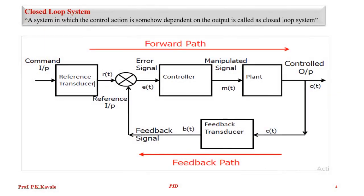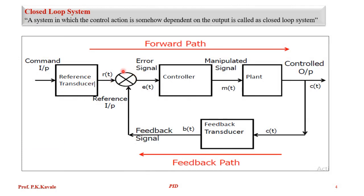So everybody knows what a closed loop system is. In a closed loop system, the reference input R(T) is given to the comparator. The comparator gives the error signal, which is fed to the controller. The controller performs some action as per the stored algorithm and its output is a manipulated signal given to the plant. The plant performs the required function and gives some output, which is fed back to the comparator. So every controller has an error signal as input and a manipulated output.